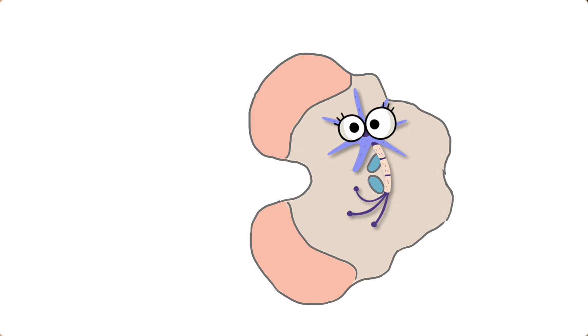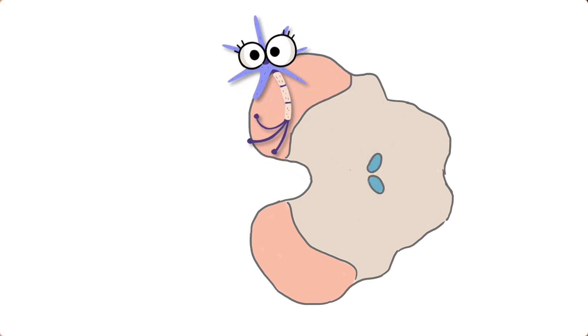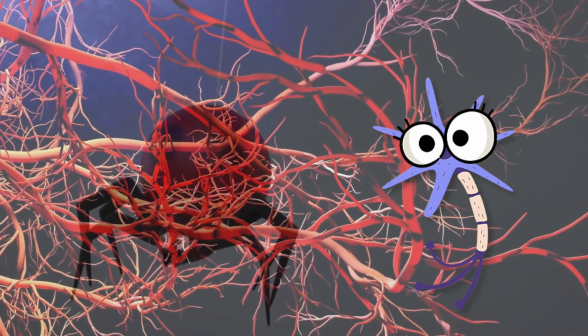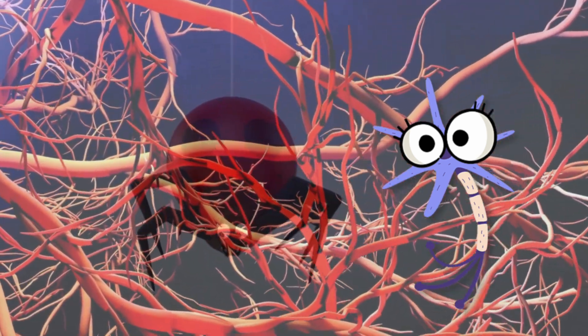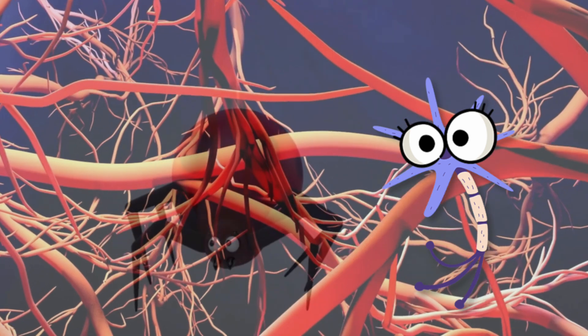Cranial nerve 3 starts its journey in the brainstem, more specifically the midbrain. Here it starts at its nucleus and then moves through the fascicular region. And then after that things get rather scary — the places that this nerve has to travel sound like they were taken straight from a Halloween movie. After leaving its brainstem, cranial nerve 3 must embark on traveling through the subarachnoid space. Could there be a more scary name for a place?